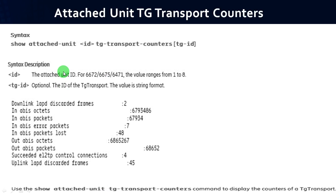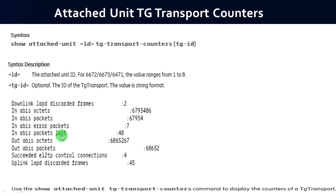To get TG transport counters, use the syntax: show attached-unit <id> tg transport-counters <tg id>. Once executed, the output includes: ABIS octets, ABIS packets, ABIS error packets, ABIS packet loss, ABIS octets, and ABIS packets.